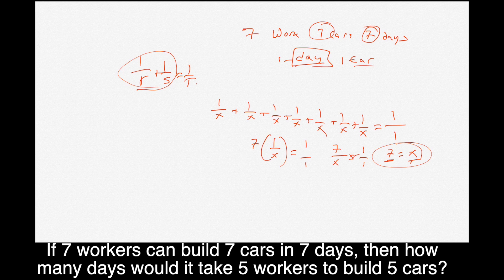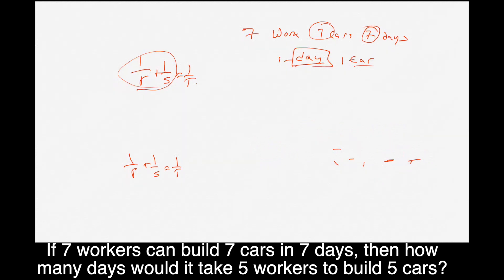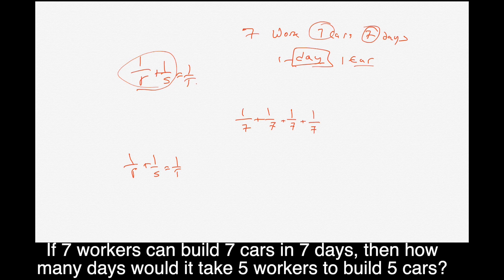So now comes the crux of the question, which is how long would it take five workers to build five cars? So again, we could do this one over R plus one over S equals one over T. Okay, but we have five workers, but we know each of them takes seven days. So because we have five workers, and we know each of them takes seven days, let's erase this and do that. We have five workers, each of them takes seven days. So one over seven, but we have five of them.